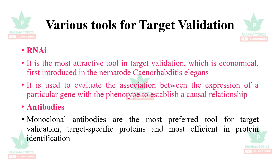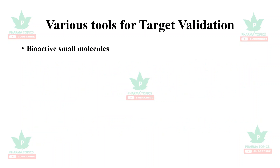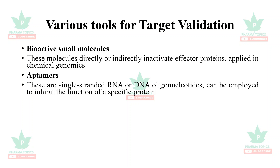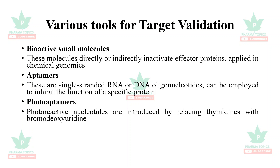Antibodies — monoclonal antibodies — are the most preferred tool for target validation; they target specific proteins and are most efficient in protein identification. Bioactive small molecules are molecules that directly or indirectly inactivate the effect of proteins, applied in chemical genomics. Aptamers are single-stranded RNA or DNA oligonucleotides that can be employed to inhibit the function of a specific protein.